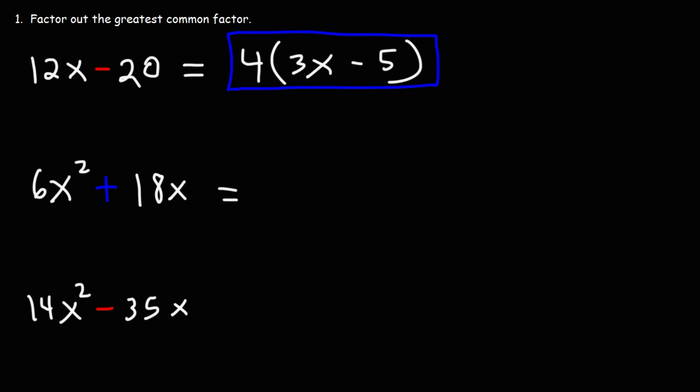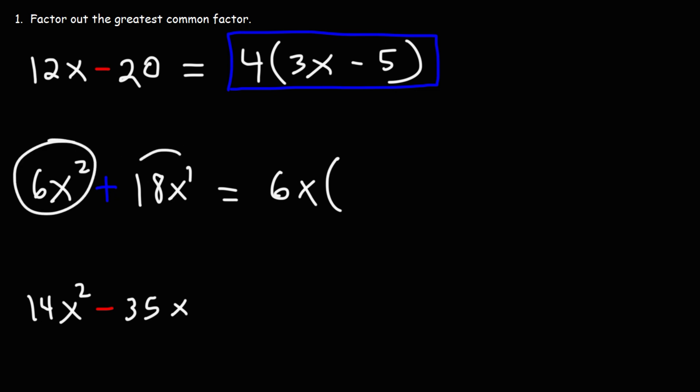Now let's try the next example. What is the greatest common factor we can take out? 6 and 18 are both multiples of 6, so we can take out a 6. Both of these terms contain at least one x variable, so we can take out an x. Each of these terms are divisible by 6x.